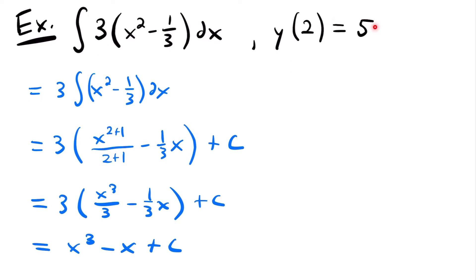But we have the initial condition that our answer y, when evaluated at 2, should be equal to 5. So this is our function y. If we plug 2 into this function and set it equal to 5, we can solve for c. We'll have that 5 is equal to 2 cubed minus 2 plus c. We plugged 2 in for each x in our general solution: 2 cubed for the first term and minus 2 matching the minus x term, and set it equal to 5.